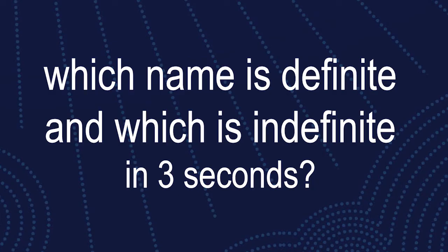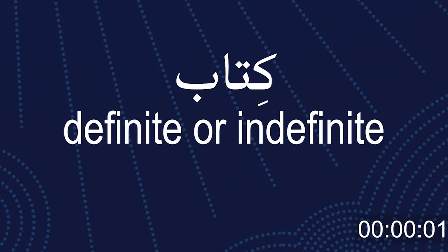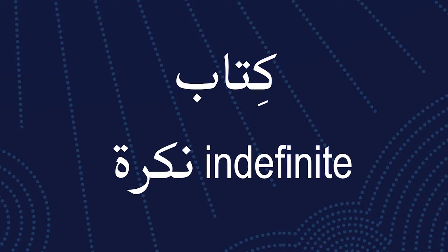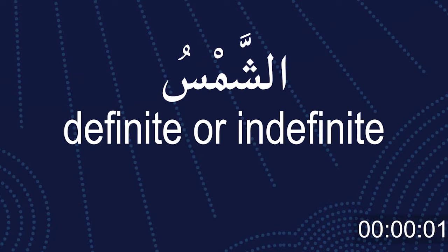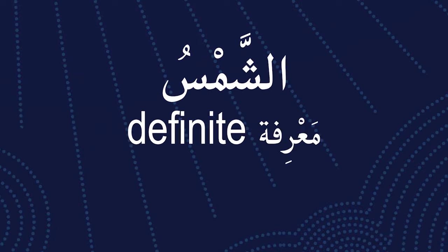Which name is definite — ma'arifa — and which name is indefinite — nakira? You don't need to know the name in Arabic right now; just choose the correct answer: definite or indefinite, in three seconds. Kitabun means 'a book' — any book.